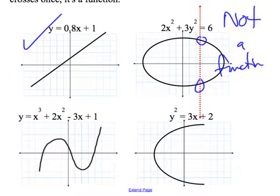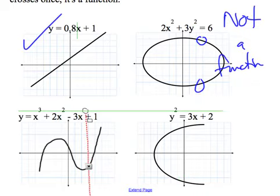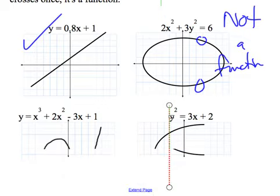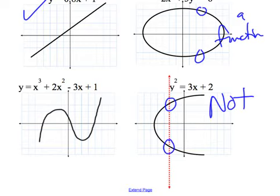This one is a cubic graph. Looking at it, there are some parts where it's close, but it always only hits once. This last one is a sideways parabola. Here it touches once, but there it touches twice. If it ever touches more than once, it's not a function. The cubic only cuts once, so it is a function.